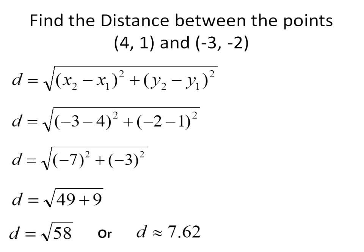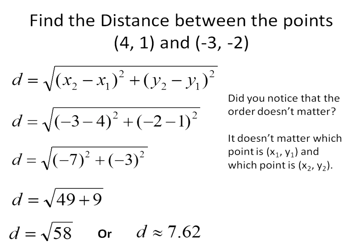That's approximately equal to 7.62. So this one here being our exact distance, that one being our approximate distance. And again, just to reiterate that the order does not matter. What really matters — and I'm going to reemphasize it again — is that when you pick a point, you keep it as point one for both the x value and the y value, and then your second point is x2 and y2. That's the most important part. The distance will always end up being positive because you can't measure a length as a negative. So just make sure that you're consistent sticking those values in there, write down this equation, and you should be good to go.